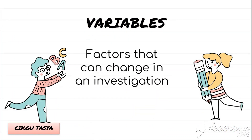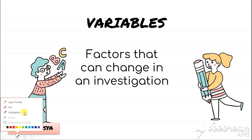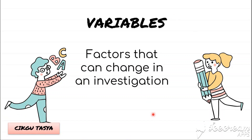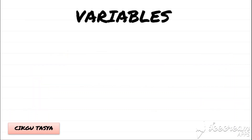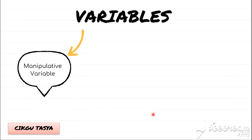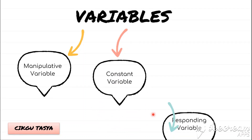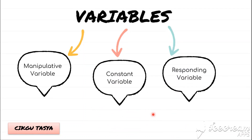So what are Variables? Variables are factors that can change in an investigation — these are the factors that cause changes in the investigation. So there are three types of variables we are going to look at: Manipulative Variable, Constant Variable, and also Responding Variable. We are going to go through them one by one and look at how to answer questions on these variables.